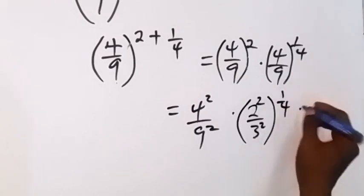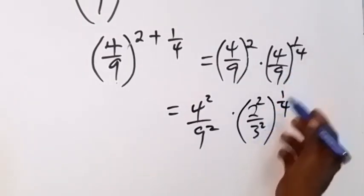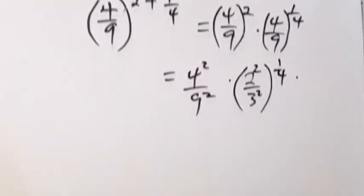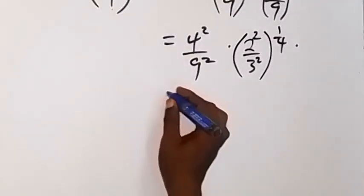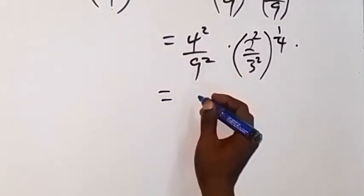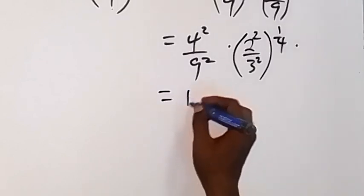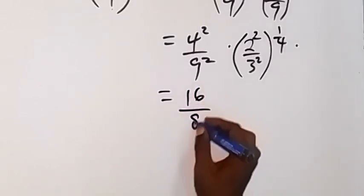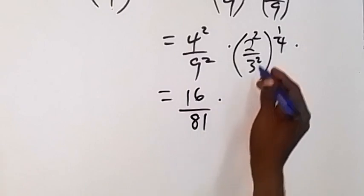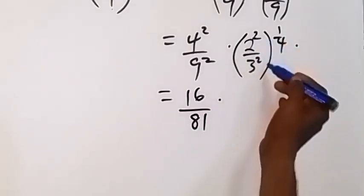So in the similar way, we can write this and say this will be 4 raised to power 2, that's 16, and then 9 raised to power 2, that's 81. Then times, we can bring this power out now.